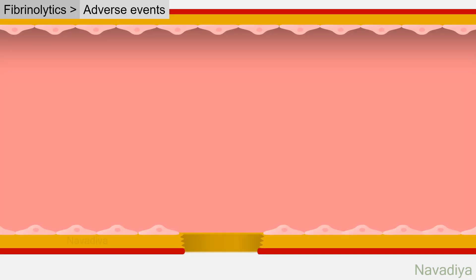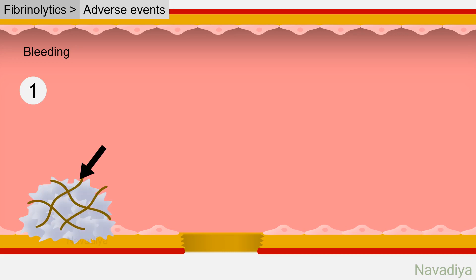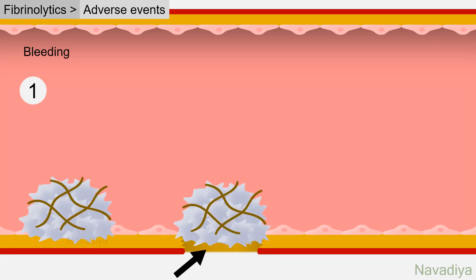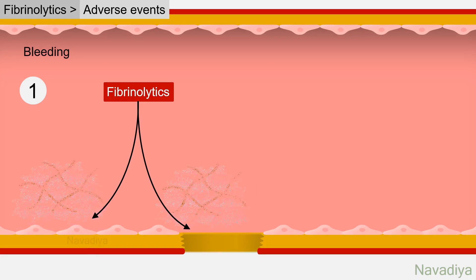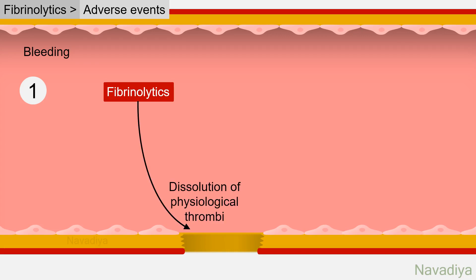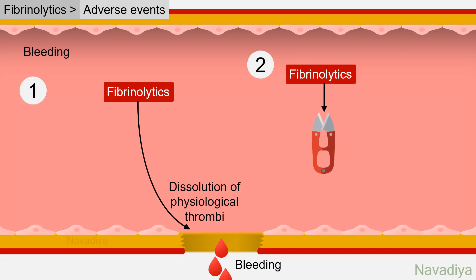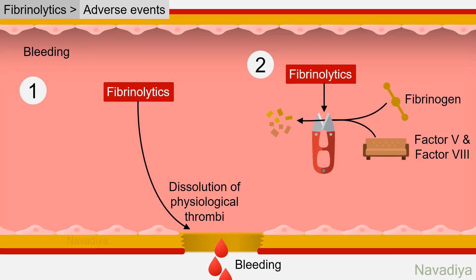Now the adverse events of fibrinolytics. A major side effect is bleeding, for two reasons. First, along with pathological thrombi, patients also have physiological thrombi preventing bleeding from breaks in blood vessels. Fibrinolytic drugs do not distinguish between them — dissolution of physiological thrombi causes bleeding. Second, fibrinolytics also produce plasmin in circulation, which degrades clotting factors like fibrinogen, factor 5, and factor 8, leading to impaired coagulation and contributing further to bleeding.